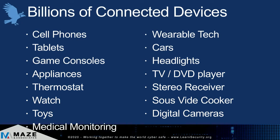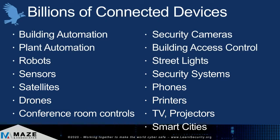One of the issues we're having today is that we have billions of connected devices — cell phones, tablets, game consoles, appliances, thermostats, medical monitoring systems, video conferencing systems, digital cameras. I have a sous vide cooker that connects to the internet so I can monitor the temperature. Some headlights in cars are now connected. Then you get into building automation, plant automation, robots in plants, sensors, satellites, drones, conference room controls, TVs, projectors, smart city stuff, building access controls, streetlights, pumps in the plant, and security systems. All of these things are now connected.